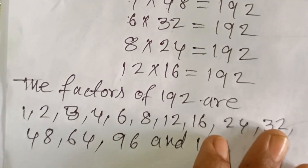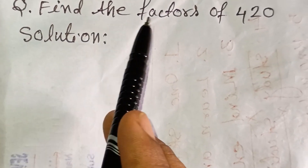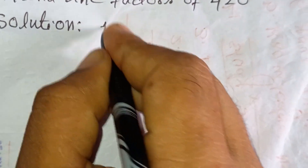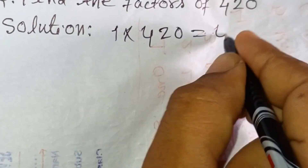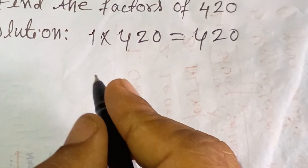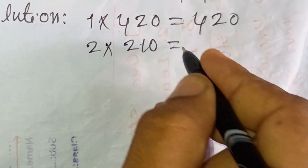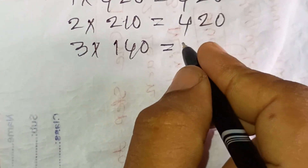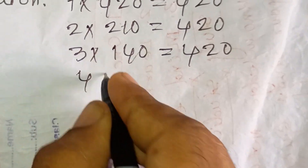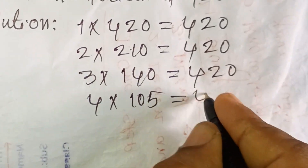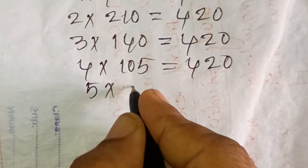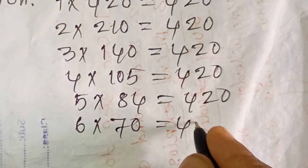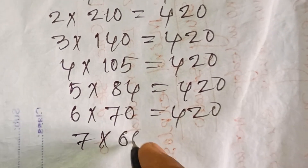Find the factors of 420. Solution: 1 × 420 = 420, 2 × 210 = 420, 3 × 140 = 420, 4 × 105 = 420, 5 × 84 = 420, 6 × 70 = 420, 7 × 60 = 420.